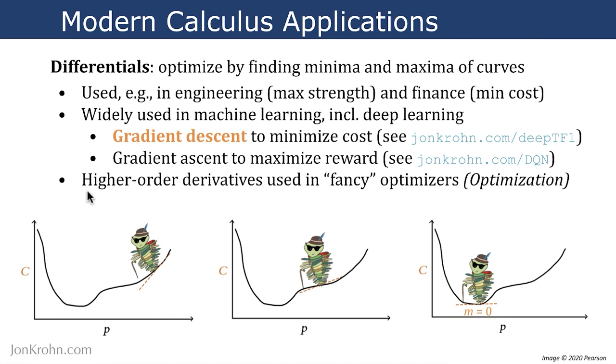We can use concepts like acceleration, these higher-order derivatives of a gradient, in fancy optimizers. These can typically learn more quickly because they can take advantage of how quickly an algorithm is learning for any particular parameter or weight in our machine learning model. We'll cover that in the eighth and final subject of this machine learning foundation series, which is called optimization.